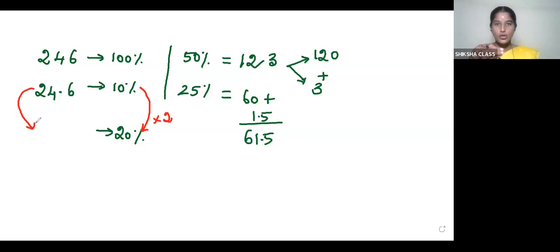We're going to multiply. If you multiply 24.6, multiply by 2. 24 times 2 gives 48, 0.6 times 2 gives 1.2. So it is 49.2, correct?